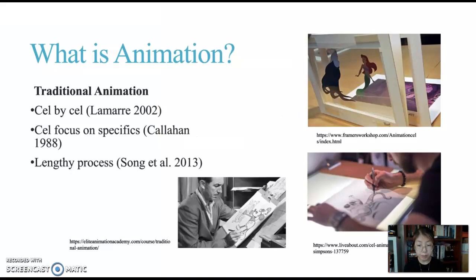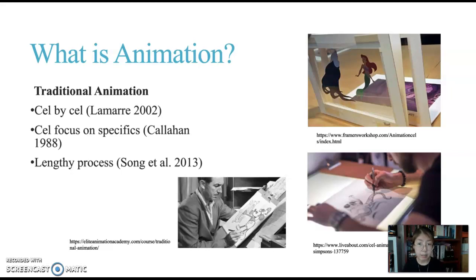So what is animation? It is a process of bringing life to motion or images. In terms of traditional animation, it is a process where images were drawn cell by cell during the early stages of animation. Cell images were put on clear backgrounds and then placed onto painted backgrounds. That is how animation is created — by working frame by frame.